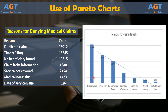Like the claims denials example in the last lecture, you can find a single cause to work on that can yield large results across the entire process. Pareto charts are also helpful when communicating information about causes to others, especially those outside of the Six Sigma process.